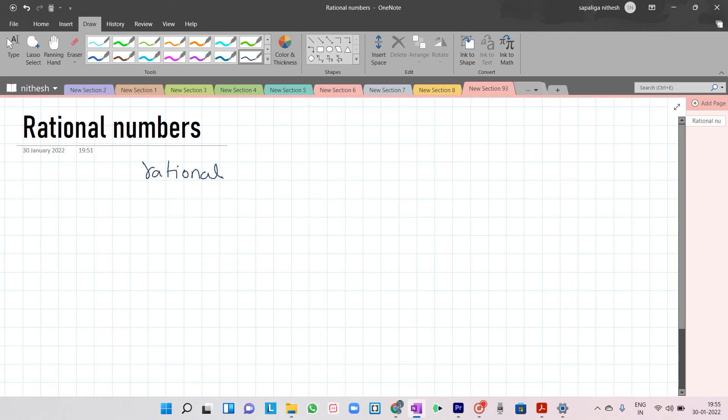The word rational arises from the term ratio. You know that a ratio like 3 is to 2 can also be written as 3 upon 2. Here 3 and 2 are rational numbers.